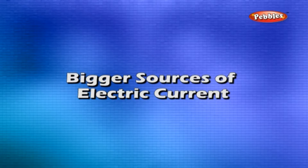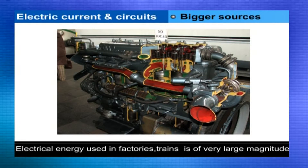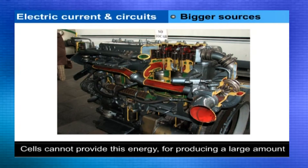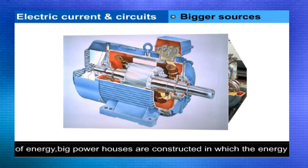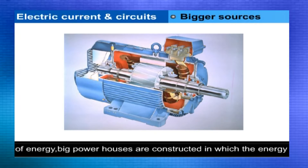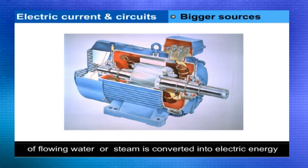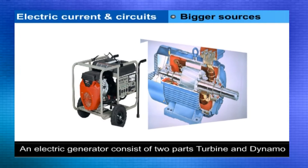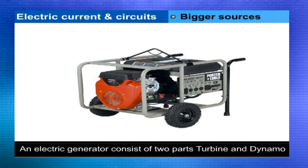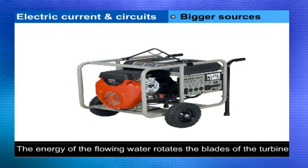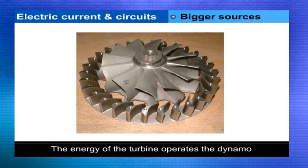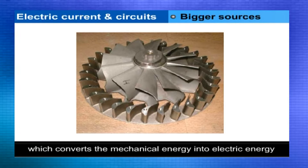Bigger sources of electric current. The electrical energy used in factories, electric trains, etc., is of very large magnitude. Cells cannot provide this energy. For producing a large amount of energy, big powerhouses are constructed in which the energy of flowing water or steam is converted into electrical energy. An electric generator consists of two parts — turbine and dynamo — which are coupled together. The energy of flowing water or steam rotates the blades of the turbine, and the turbine operates the dynamo, which converts mechanical energy into electrical energy.